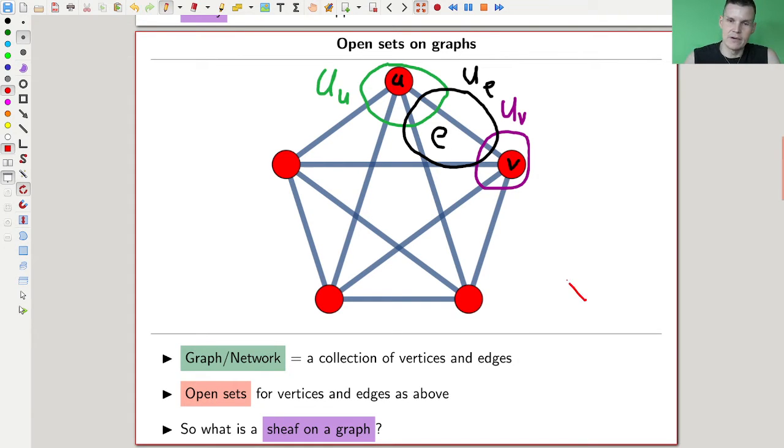So on a network, like this guy here, what are the open sets on the network? Depends a bit what you want to do. But I claim the correct notion, correct in quotation marks, on open sets is you have for every vertex, you have the star open set. So you have the vertex u, and there's a star open set that contains a little bit of the outgoing edges of the vertex, like in my little picture up here. And same for the other vertex. And of course, you have the bubble that covers an edge, and I call that U of e, and there will be some nice intersections between them.